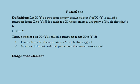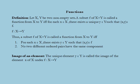Another term associated with a function is the image of an element. The unique element y belonging to y is called the image of the element x under the function f: x → y, and it is denoted by y = f(x). The element y is also known as the value of the function f at x, and the element x is known as the preimage of y.